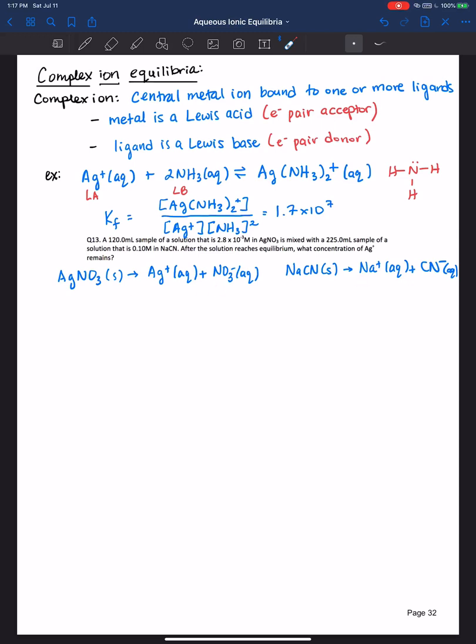So sodium nitrate will be spectator ions. It's also soluble in water, and so they'll just swim around solution. So we're going to focus mainly on the silver and the cyanide coming together to form a complex ion. Now the concentration of silver ions in solution is equal to 2.8 times 10 to the negative third molar. And that comes from this concentration here. The mole ratio of silver nitrate to silver ion is 1 to 1. So the concentration of silver nitrate is the same as the concentration for the silver cation.